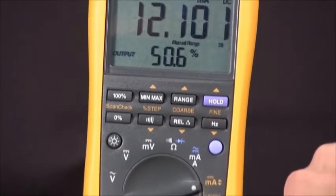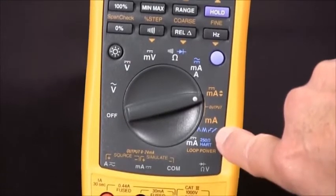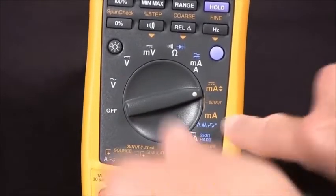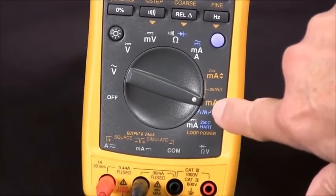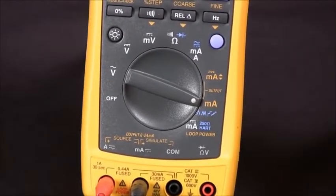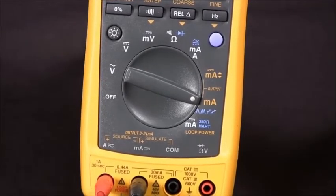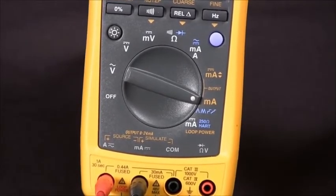If we need to do automatic ramping or step functions, we can go to the other sourcing position and with the blue key select one of those four. That's how we source 4 to 20 milliamps DC with our 789 process meter.